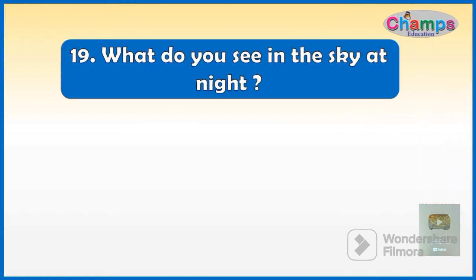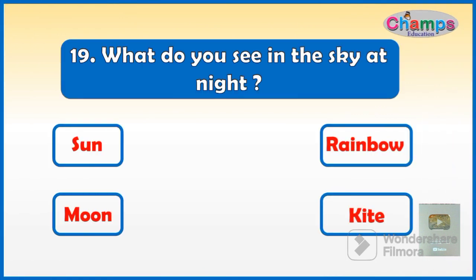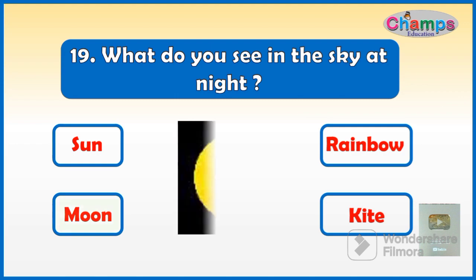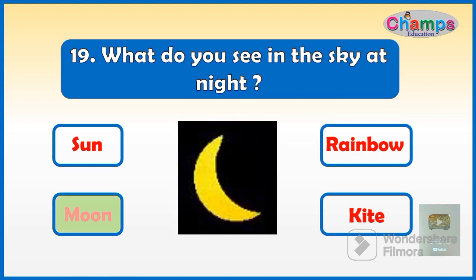What do you see in the sky at night? Your options are: Sun, Rainbow, Moon, Kite. And your time starts now. And the correct option is Moon.